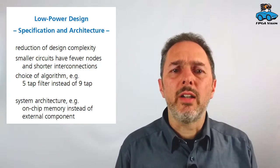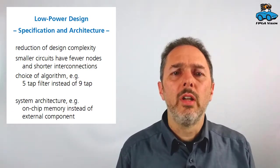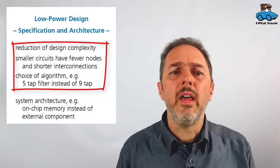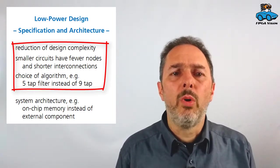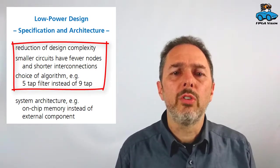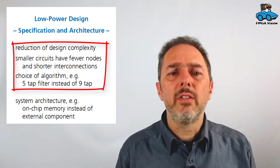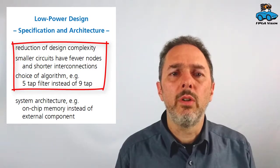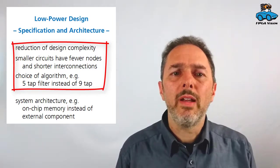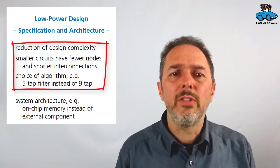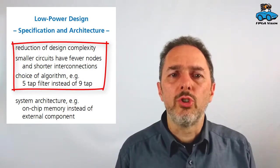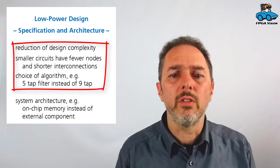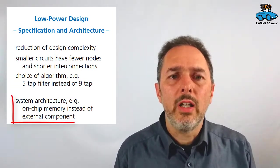On the side of specification and architecture, you have more options. You can reduce design complexity, so you can reduce the number of nodes in your circuit. If you have a smaller circuit, you have fewer nodes, shorter interconnections. This can be done by choosing the right algorithm. If you do a filter, you can decide what is the complexity of your filter. Do you want a 5-tap filter or do you need a 9-tap filter? It is a choice you can make between quality of your processing and power consumption.